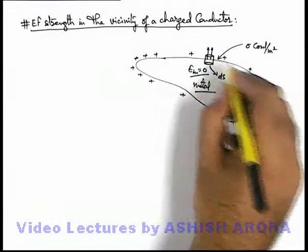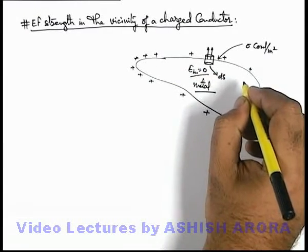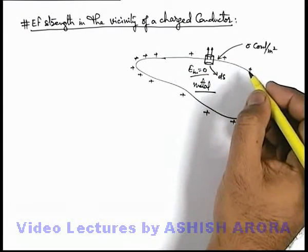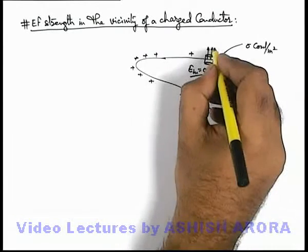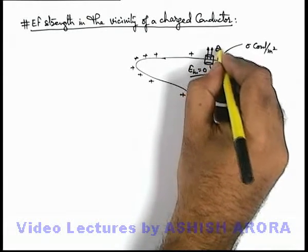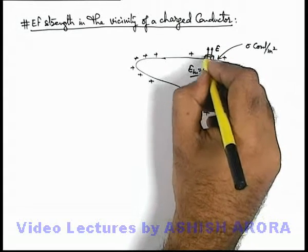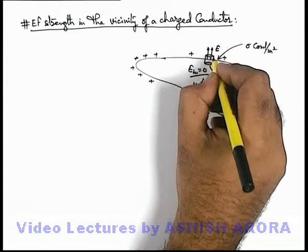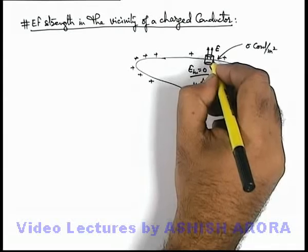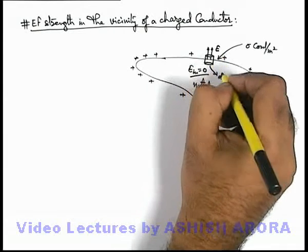Because it is a metal body and we know due to static charges inside a metal body, electric field is always zero. So if electric field just outside the metal surface is E, the flux which will be coming out from this cylindrical surface will be simply E d-s.